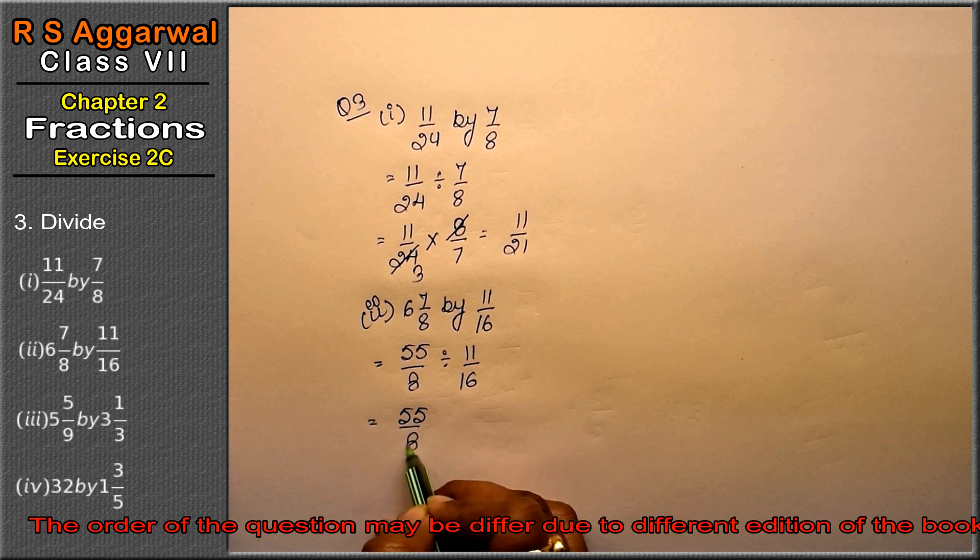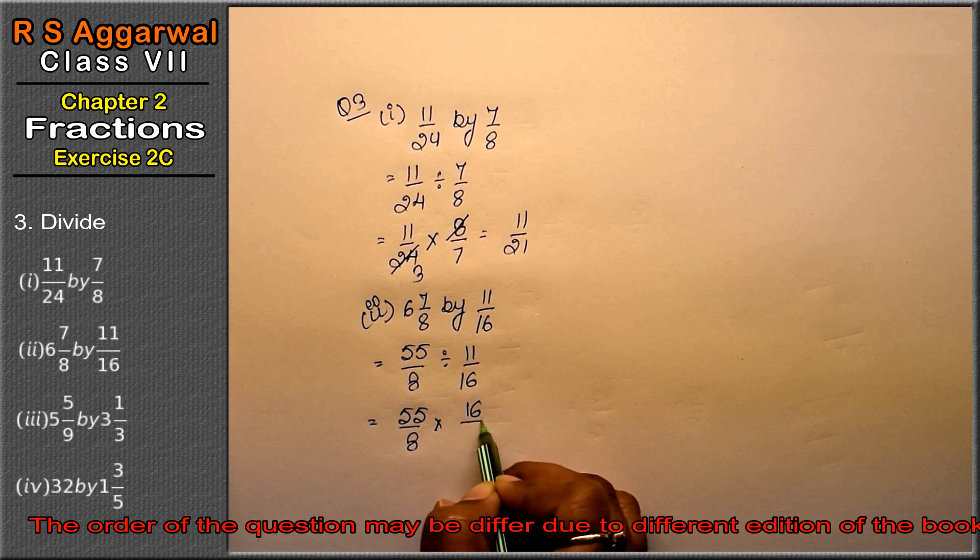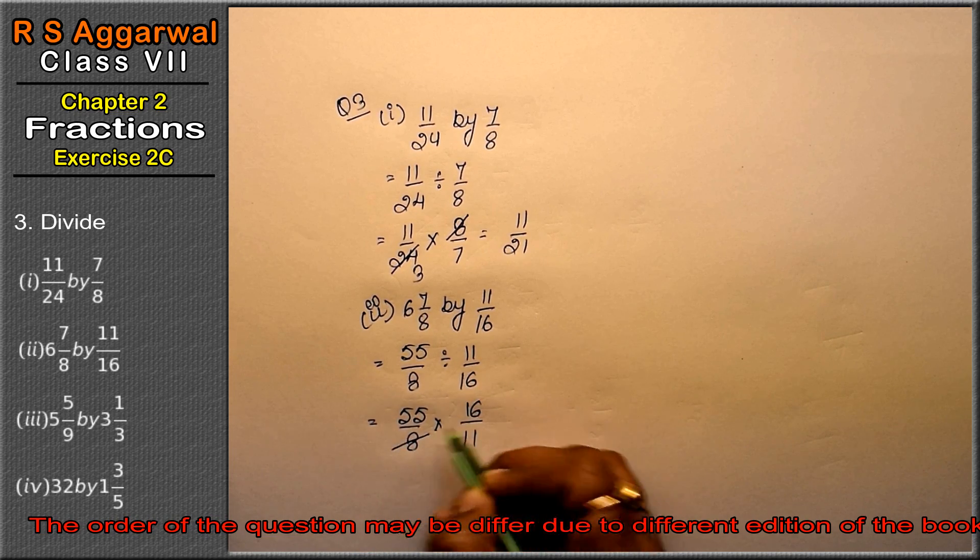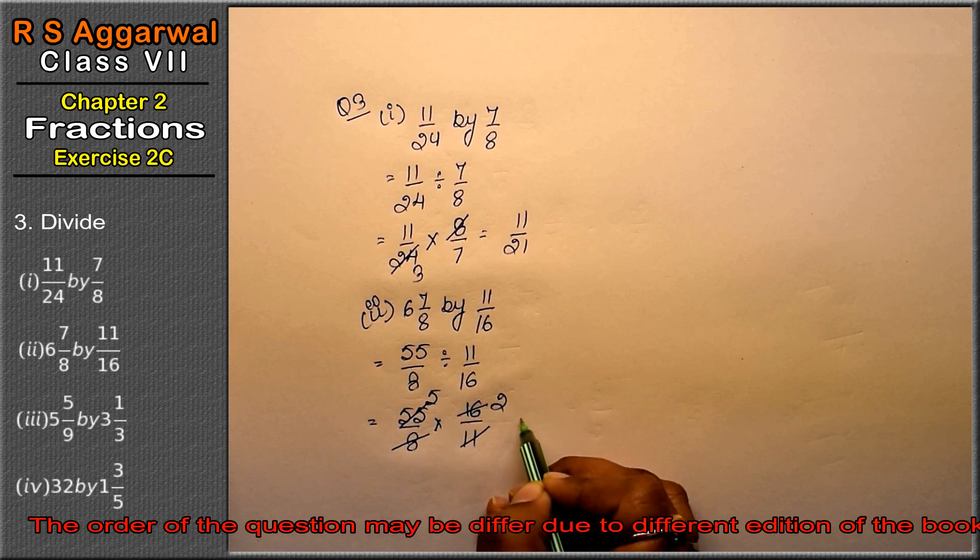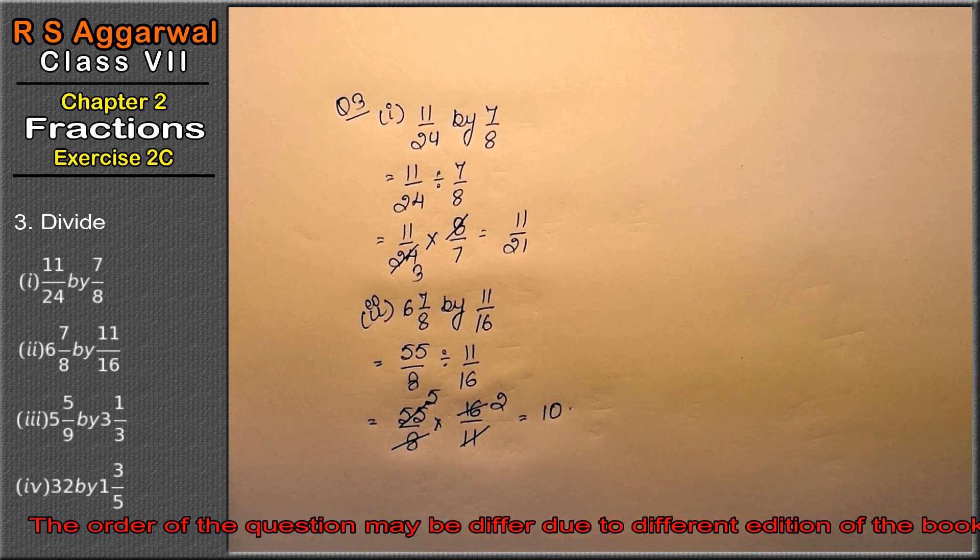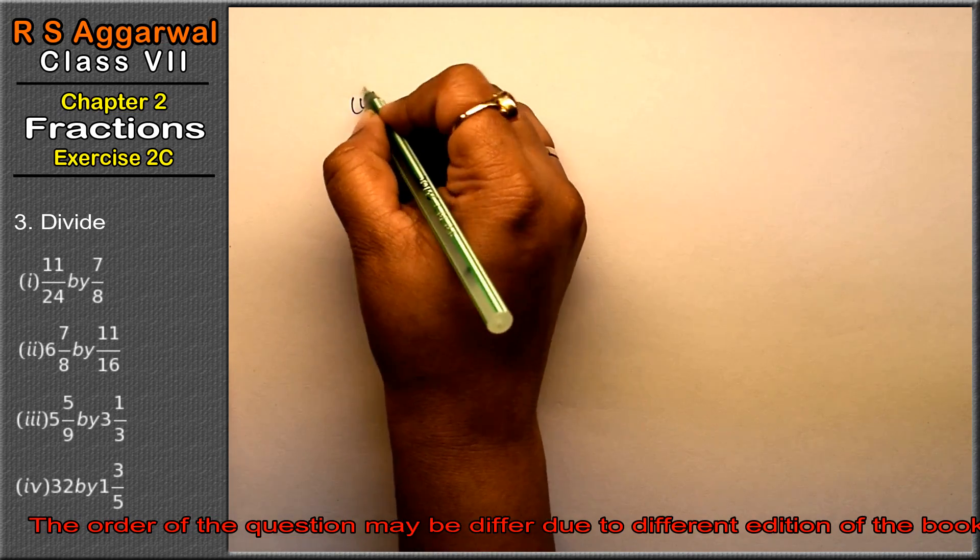So what can we do? 55/8 multiplied by 16/11. So 8 times 2 is 16, 11 times 5 is 55. 5 times 2 is 10, that's the answer. Let's do third part.